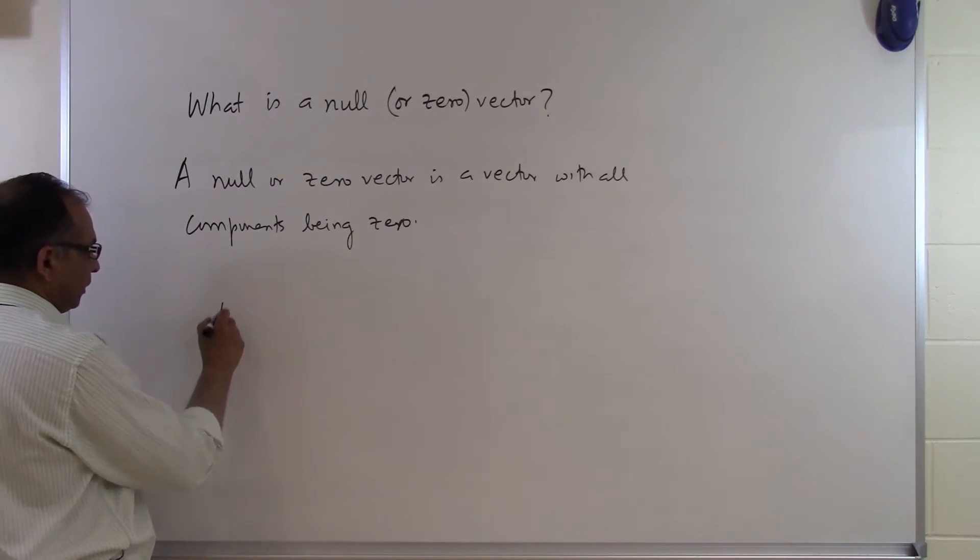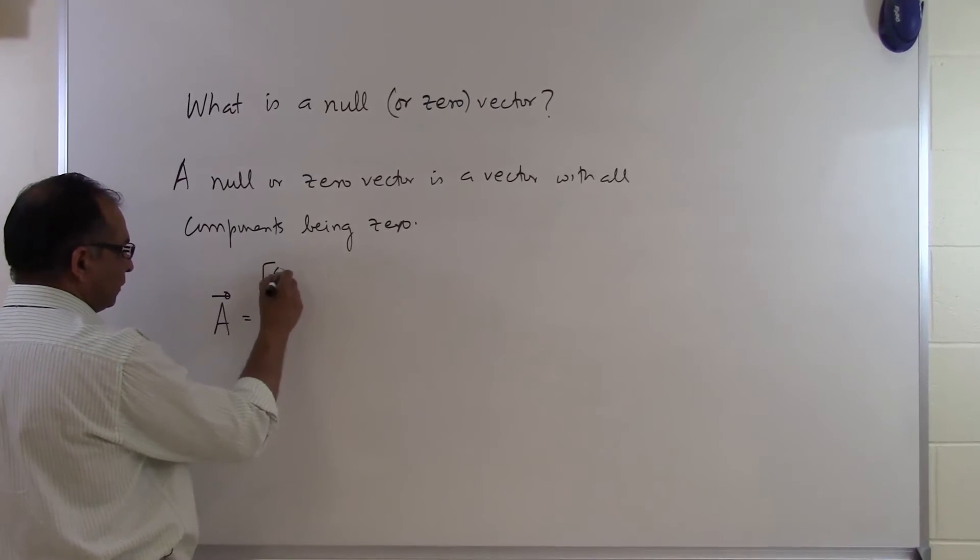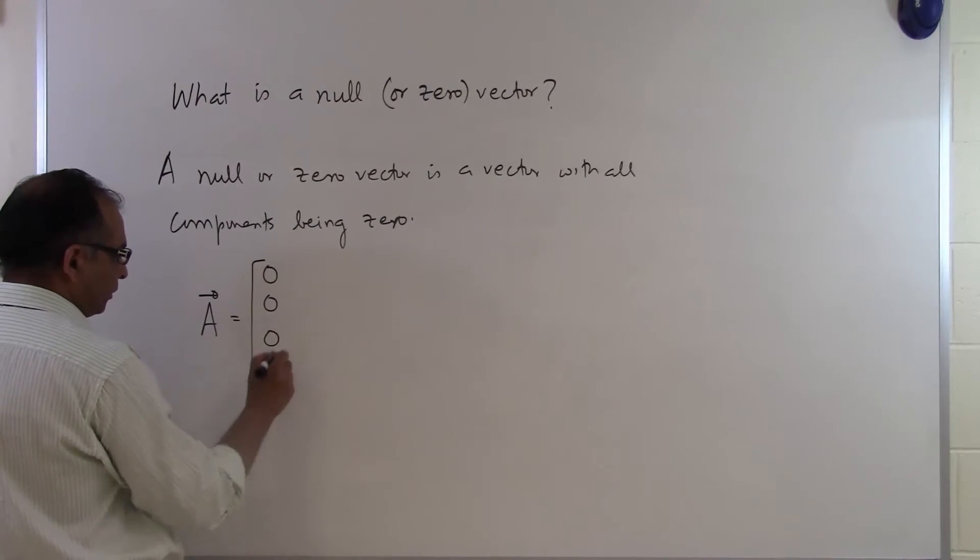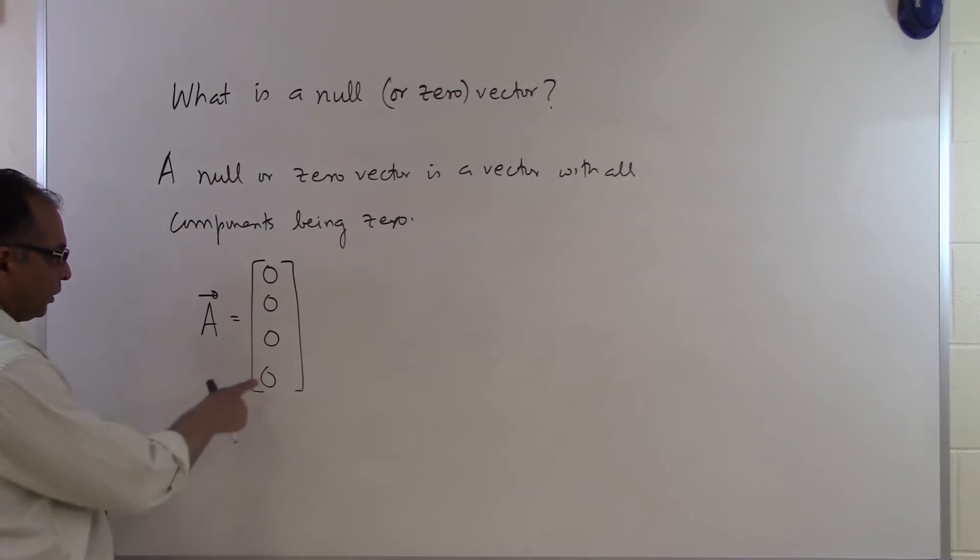So an example can be if somebody says is this a null vector or a zero vector. I'll put zero, zero, zero here. It's a four dimensional vector. All its four components are zero.